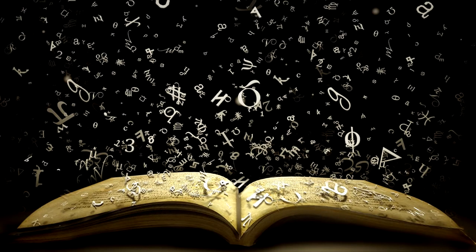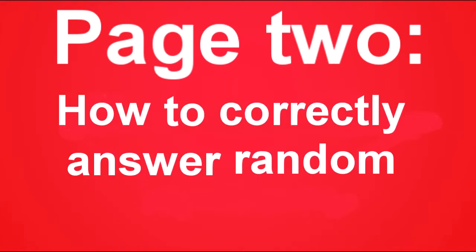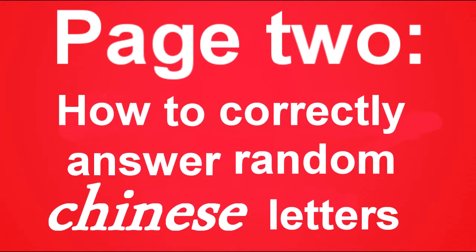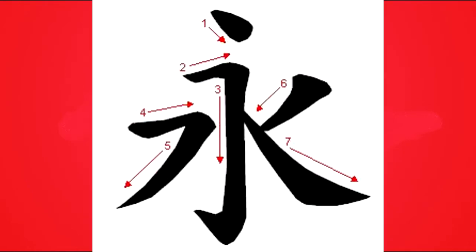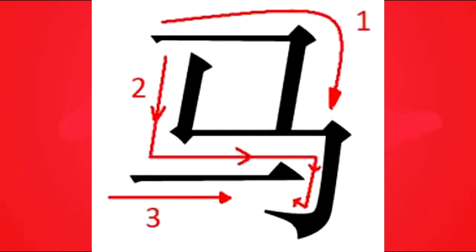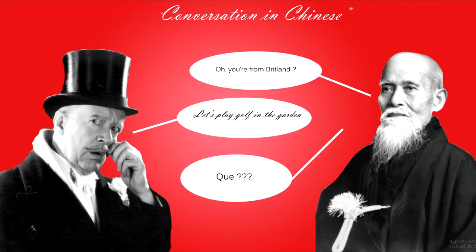Step five: pick up your fancy instruction book and open it on page two, "How to Correctly Answer Random Chinese Letters." This chapter will tell you how to properly write a response to the notes you just got handed. Follow the instructions and you will soon have a response completely written in grammatically correct Chinese — and the response will also correctly answer the questions given to you on the sheet of paper.